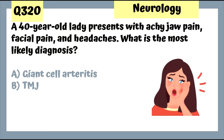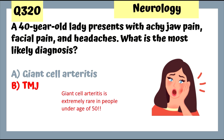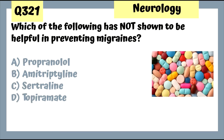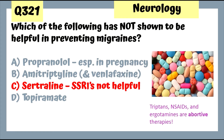Question 320: A 40-year-old woman with achy jaw pain, facial pain, and headaches — this is likely TMJ. Giant cell arteritis would be in a patient above 50. Question 321: Which has NOT been shown helpful in preventing migraines? Sertraline (an antidepressant) has not been helpful, but propranolol, amitriptyline, and topiramate may all be helpful. Remember, triptans, NSAIDs, and ergotamines are all abortive therapies.